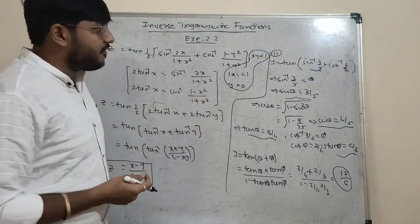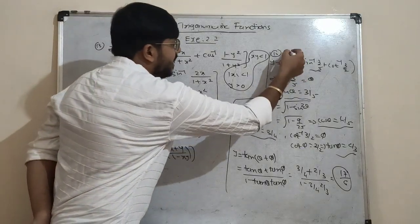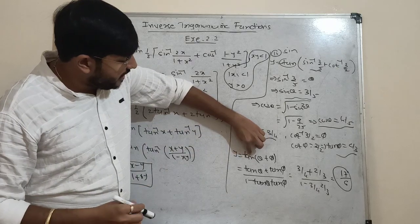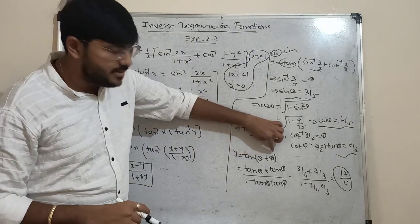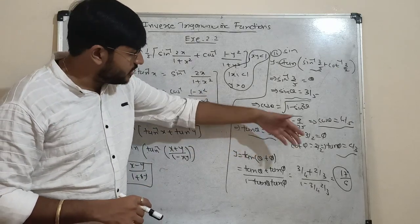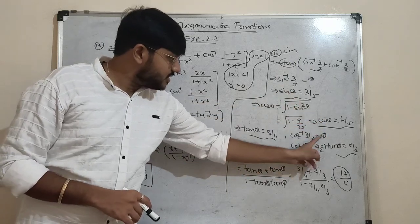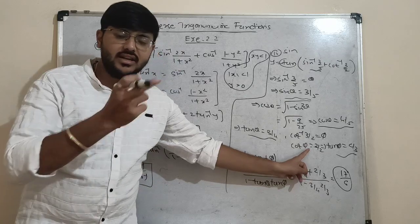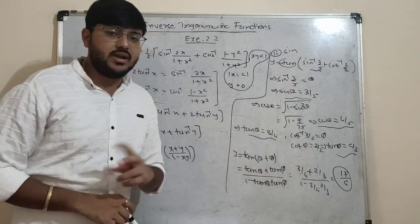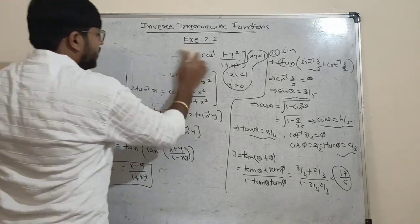A similar question could ask for sin instead of tan. In that case you'd get sin(θ + φ), and you would need sin θ, cos θ from the first angle and sin φ, cos φ from φ. They may make some changes to that.